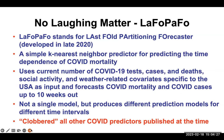This is why we developed a tool called LAFO-PAFO — the Last-Fold Partitioning Forecaster — developed in late 2020. It uses a pretty simple idea called a K-nearest-neighbor predictor, taking information from the last five or ten weeks to predict what's going to happen over the next five or ten weeks. It uses more than just the number of deaths or infections — it included COVID test numbers, cases and deaths, social activity and mobility, and weather-related covariates, because in summer COVID tends to drop and in winter, when everyone goes indoors, it tends to grow. We used US data to forecast COVID mortality and cases up to 10 weeks — about two and a half months — out.